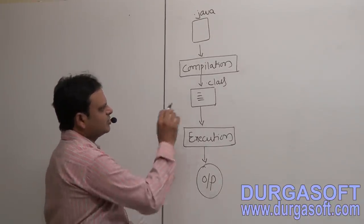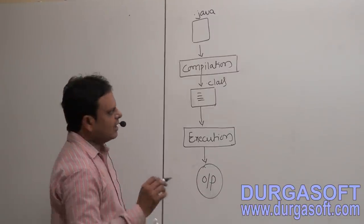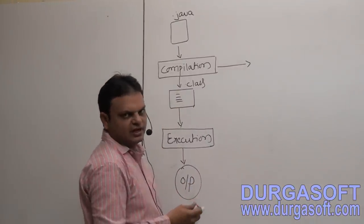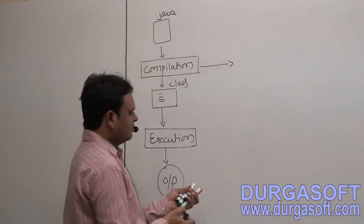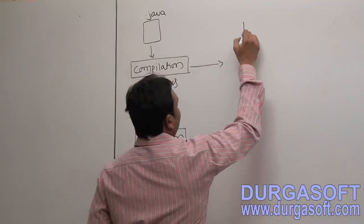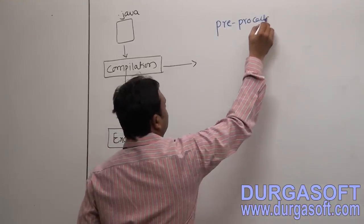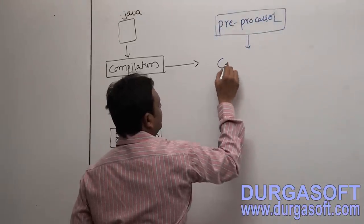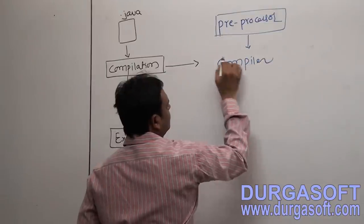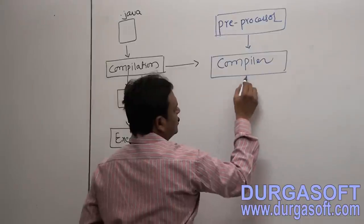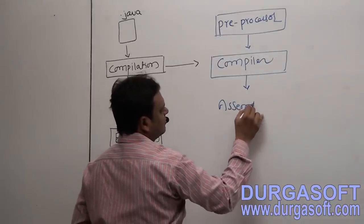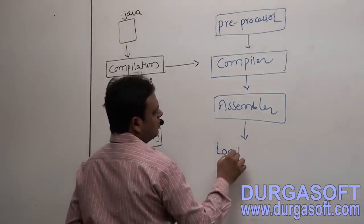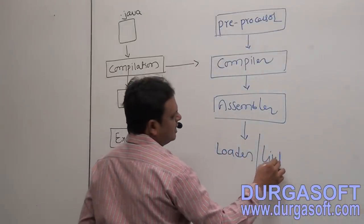Compilation is a work from four missions. The first one is the preprocessor. After this, next one is the compiler. After the compiler, assembler and loader. After the assembler, the link editor. This is the last one.